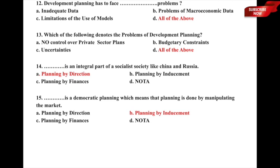Question 14: Dash is an integral part of a socialist society like China and Russia — whether it is a) planning by direction, b) planning by inducement, c) planning by finances, or d) none of the above. The correct answer is option a) planning by direction, where the socialist party has entire control over resource allocation.